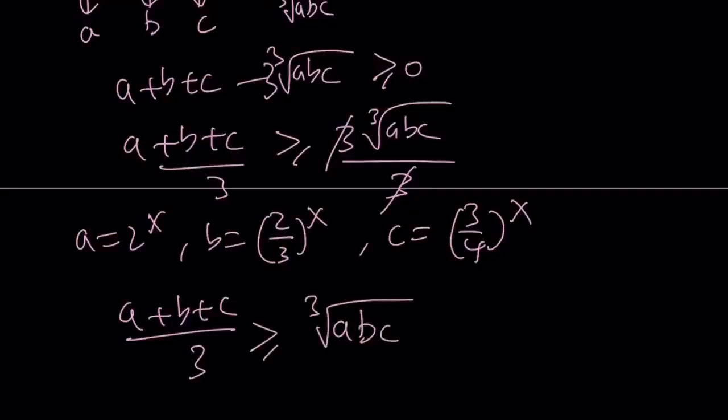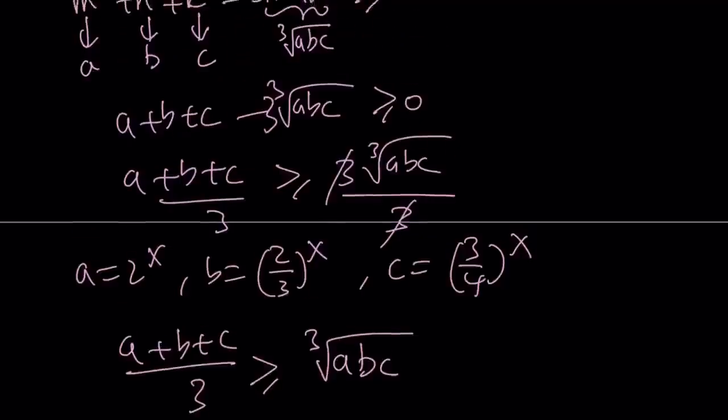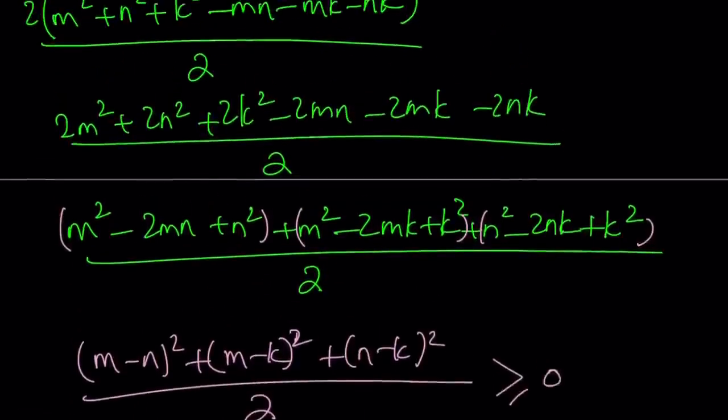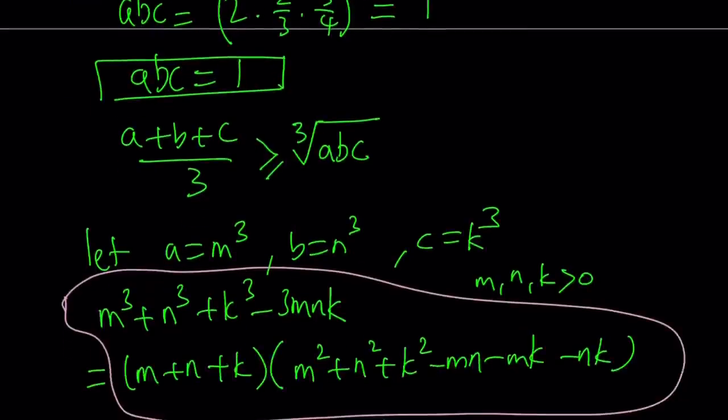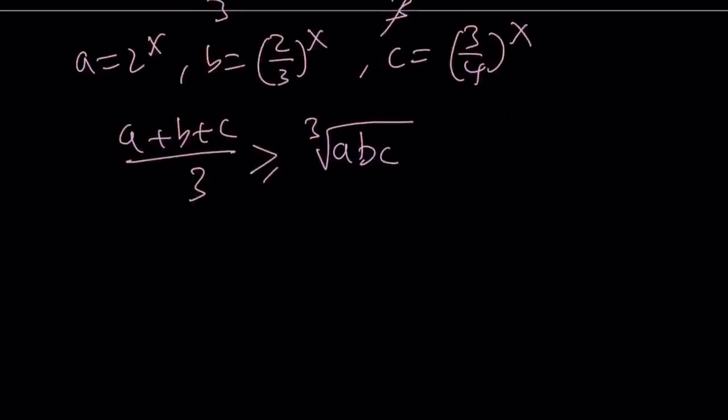And we know that the average is going to be greater than or equal to the cube root of abc. We also know that abc is equal to 1, right? We showed that here because that's what a, b, c are. So we know abc is equal to 1. Therefore, this is going to equal 1.